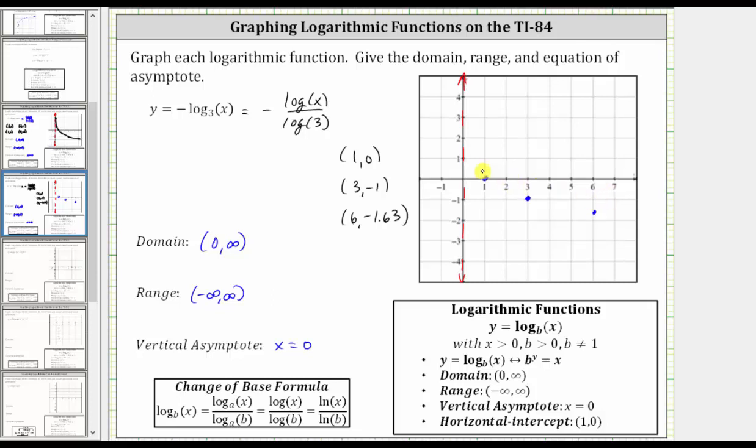We know as x approaches zero, the graph is going to approach the vertical asymptote and the function values approach infinity. And therefore on the left, the graph looks something like this. And then to the right, the function continues to decrease and looks something like this.